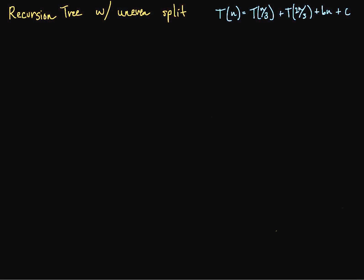Welcome to our 17th video on data structures and algorithms. I realize I haven't been talking about some of the stuff we've gone over in recitation, which is really what I should be doing. So let's go over a couple of examples from last week. We have a recursion tree with an uneven split, and these can be kind of difficult to figure out because the recursion tree can be pretty big and difficult to keep track of. So let's go ahead and do this example.